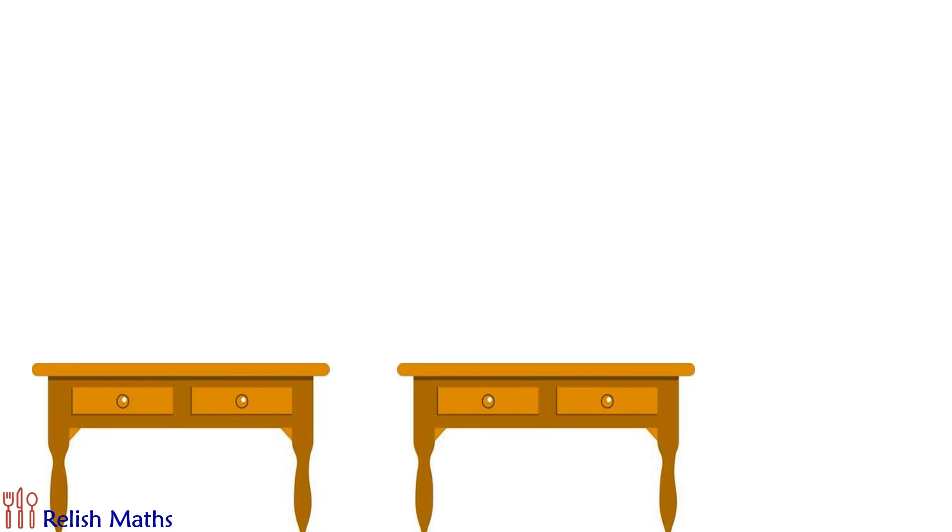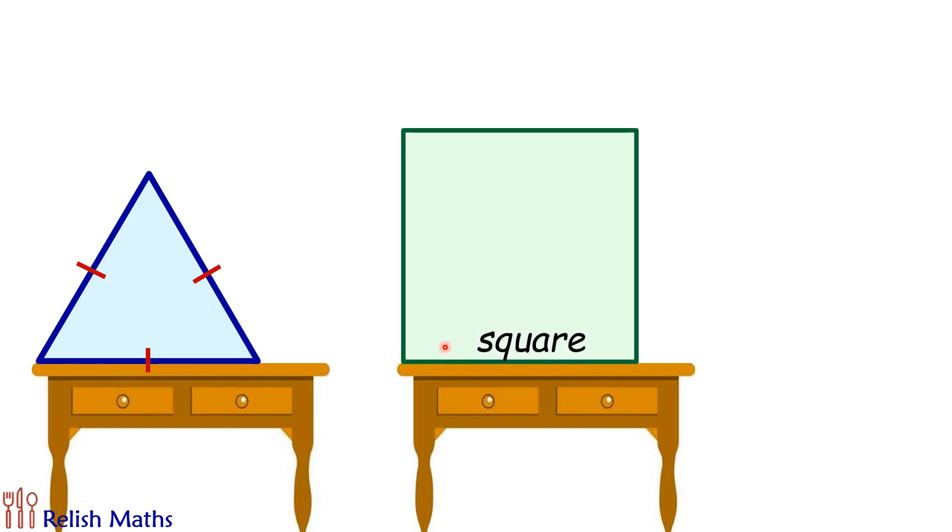Let's look at this interesting question where two identical tables are there. On the first table we are dropping an equilateral triangle with vertex touching the edge of the table, and on the other table we are dropping a square with vertex touching the edge of the table.